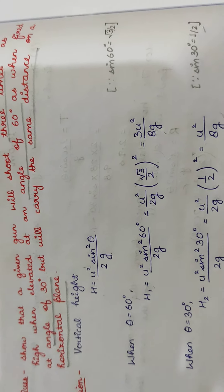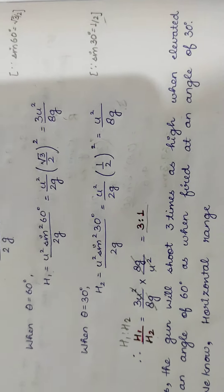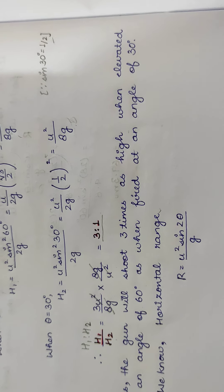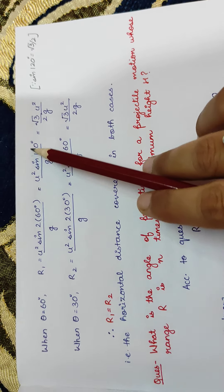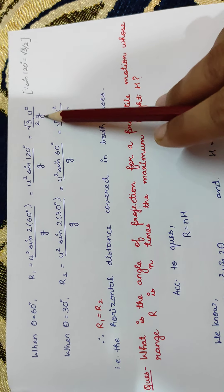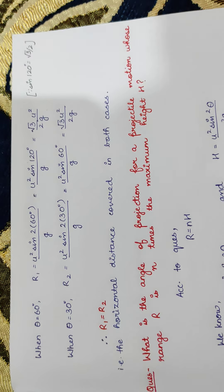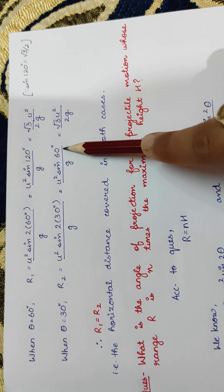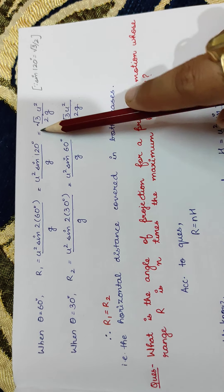Now we also need to prove that the horizontal distance is the same in both cases. The horizontal range is given by R = u² sin2θ / g. For θ = 60°, sin 120° = √3/2, giving R1 = √3 u²/2g. For θ = 30°, sin 2θ becomes sin 60° = √3/2, giving R2 = √3 u²/2g as well.